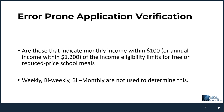Error-prone applications are those that indicate monthly income within $100, or annual income within $1,200, of the income eligibility limits for free and reduced price meals — meaning either just above the free rate threshold or just below the reduced rate threshold. It's only below the reduced rate and below the free rate, because you're not going to verify a denied application. We don't have figures for weekly, bi-weekly, or bi-monthly, so if you pick an application, you need to convert it to annual income to determine if it is an error-prone application.